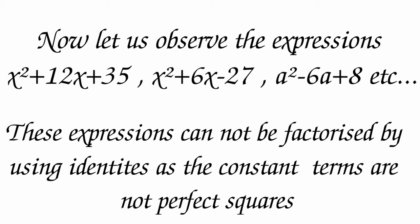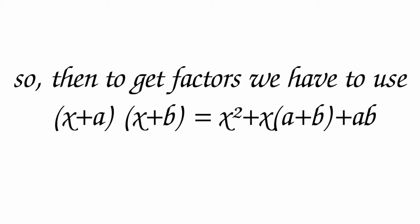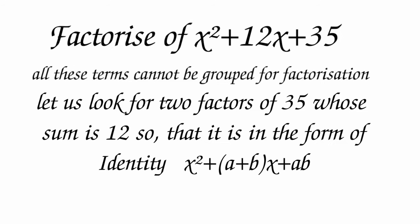Now observe expressions like x² + 12x + 35, x² + 6x - 27, a² - 6a + 8. These cannot be factorized using identities as the constant terms are not perfect squares. So to get factors, we use x + a)(x + b) = x² + (a + b)x + ab. Factorize x² + 12x + 35. These terms cannot be grouped directly. We look for two factors of 35 whose sum is 12, so it fits the identity x² + (a + b)x + ab.